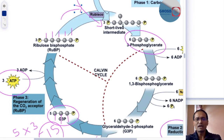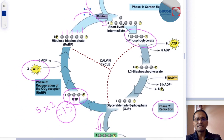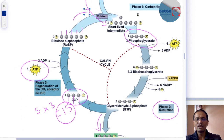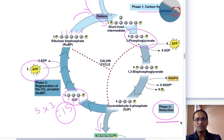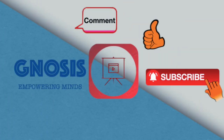The Calvin cycle has three distinct phases: the carbon fixation phase, the reduction phase, and the regeneration phase. If you liked this video, do not forget to like and comment, and subscribe to the channel to watch upcoming videos.